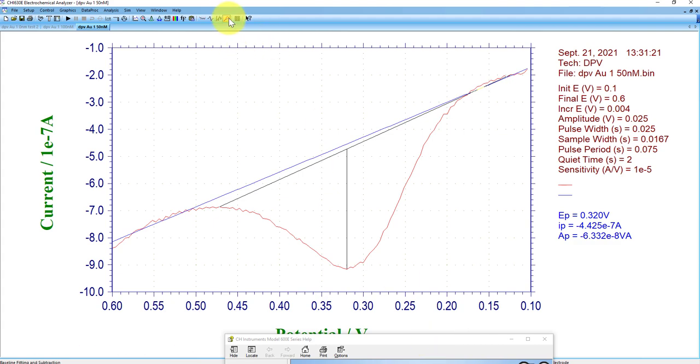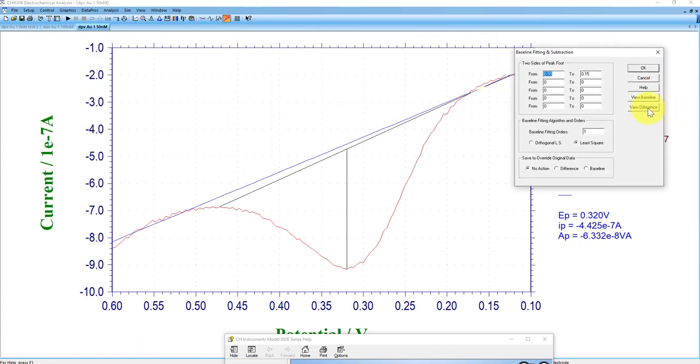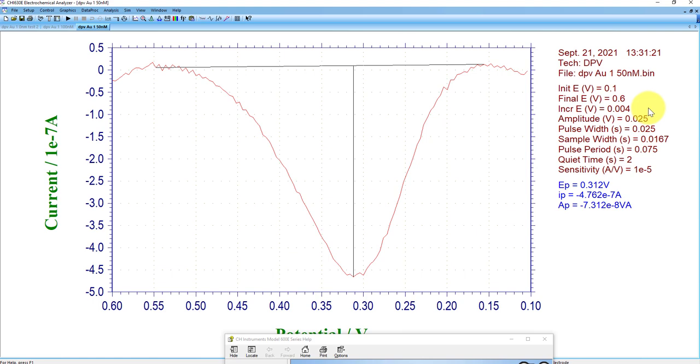And so in this case now we can, if we like this, then I can go back to view difference, and it's going to replot my data after subtracting out that baseline fit. And then I can export this data in the way that I'd like or resave it as a new file. Just don't save over or overwrite the data.